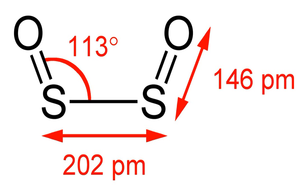Disulfur dioxide, dimeric sulfur monoxide or SO dimer, is an oxide of sulfur. The solid is unstable with a lifetime of a few seconds at room temperature.